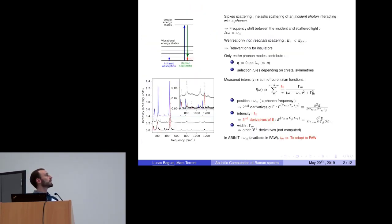The mechanism responsible for Raman scattering is an inelastic scattering of an incident photon interacting with a phonon. The measured spectra, as shown here on the bottom left, are a set of peaks, and each peak corresponds to an active phonon mode. Note that active phonon modes have zero wave vectors. Every peak can be approximated as a Lorentzian function and so depends on three parameters: its position, its intensity, and its width.